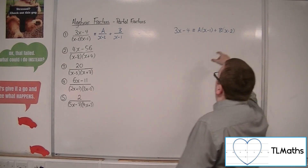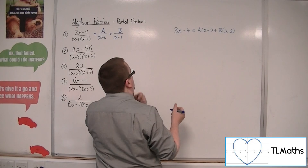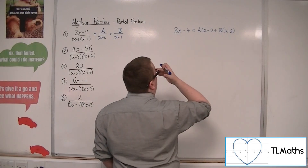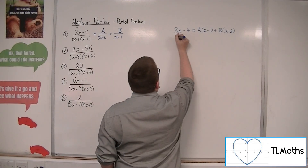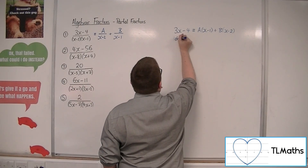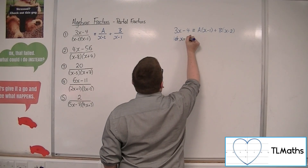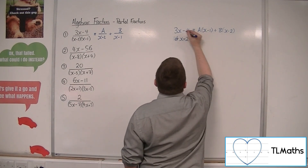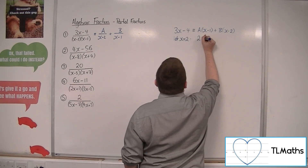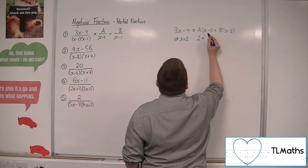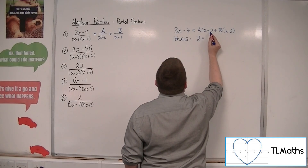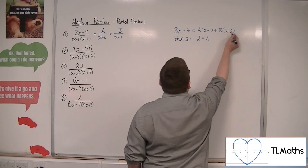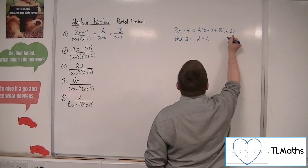At this stage we let x take certain values to knock out those brackets. If we let x be 2, then we get 6 take away 4, which is 2. And we've got 2 take away 1, so 1 lot of A. So A equals 2.